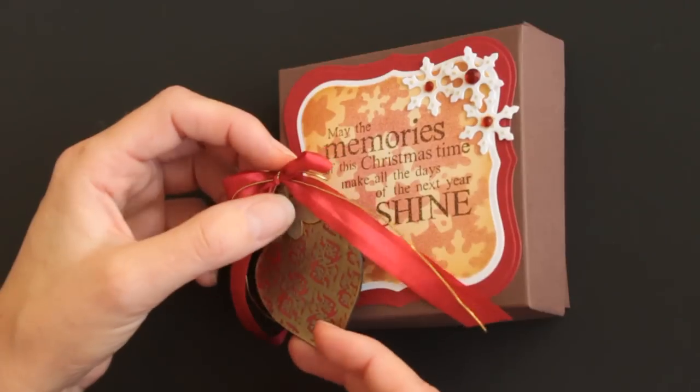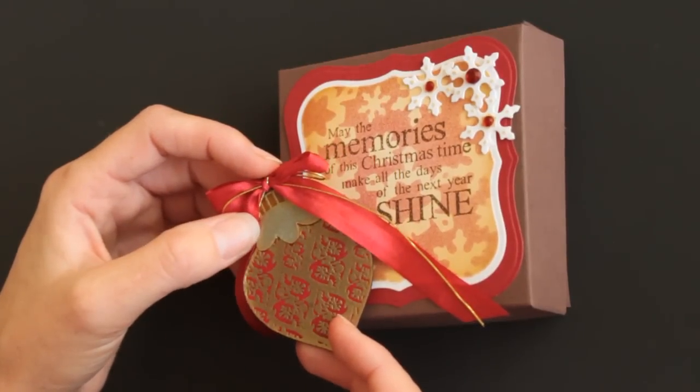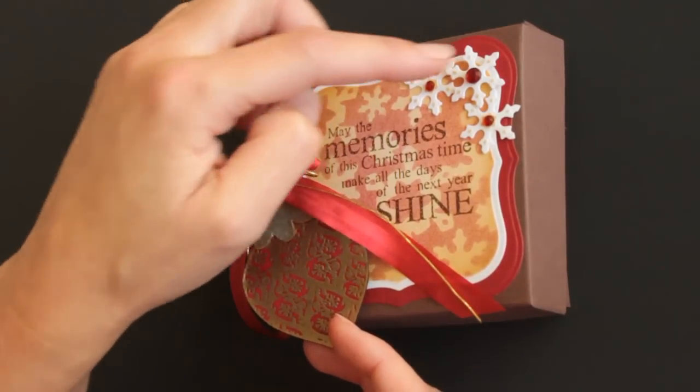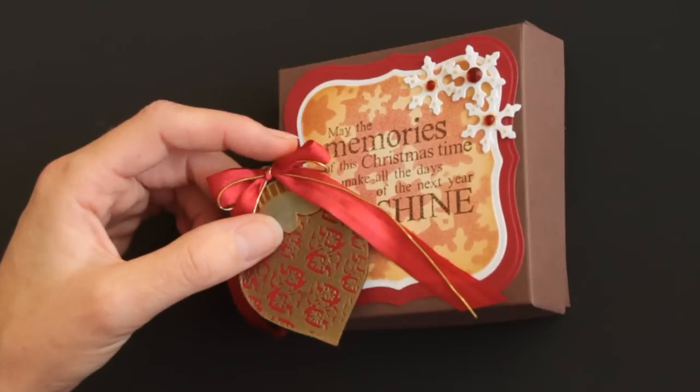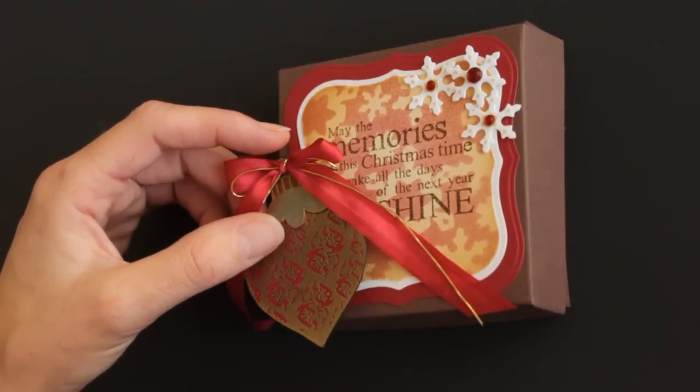All stamps used in this sample are from Unity's Embellished Season. The dies, as well as the snowflakes, are cut and embossed with Spellbinder dies.